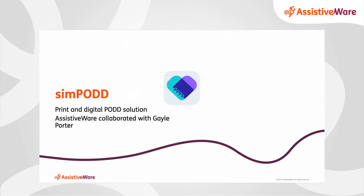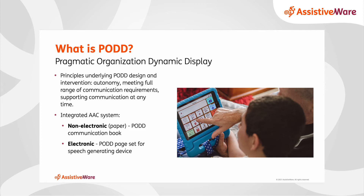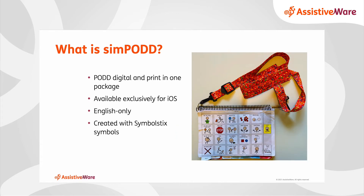Now let's talk about Sympod. Sympod is an app developed by AssistiveWare in direct collaboration with Gail Porter, the creator of Pod. It allows for both print and digital capabilities within a single app. Pod has a number of key principles, including working towards communication autonomy, meeting a full range of communication requirements, and supporting communication at any time. Pod encourages an integrated AAC system with both a Pod book and an electronic version of Pod, both of which are available in Sympod. Sympod is only for iOS and only in English, and it uses SymbolStix symbols.